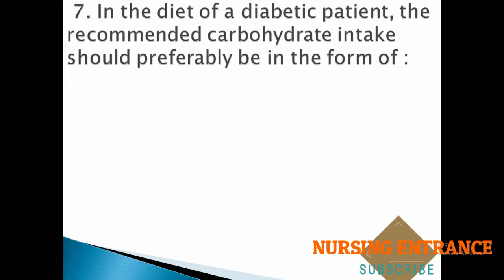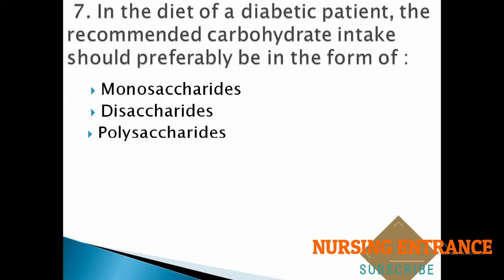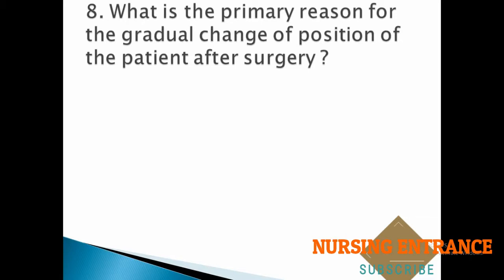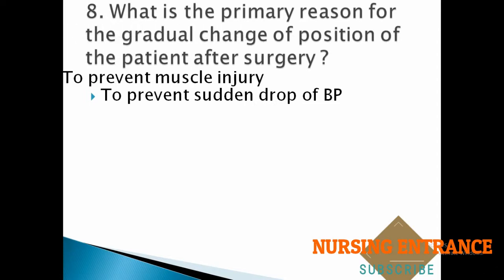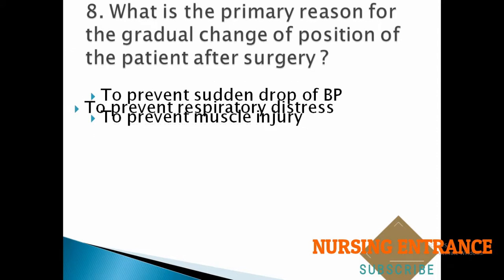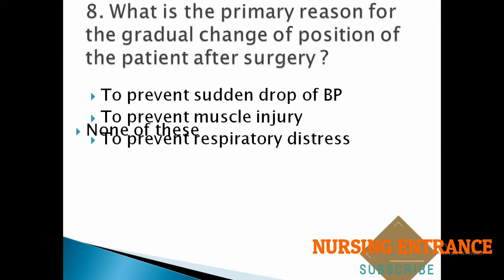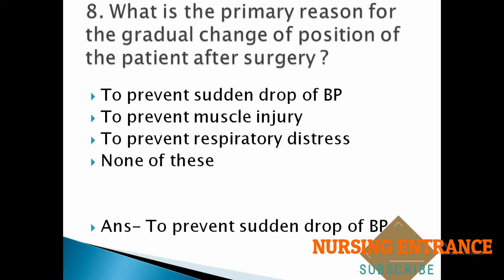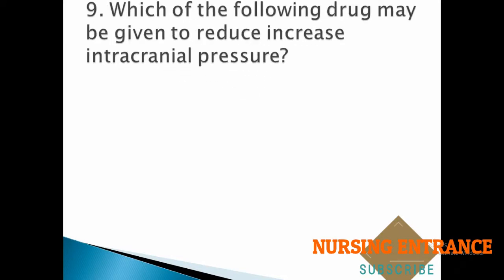Question number seven: in the diet of a diabetic patient, the recommended carbohydrate intake should preferably be in the form of: monosaccharides, disaccharides, polysaccharides, or all of these. The correct answer is polysaccharides. Question number eight: what is the primary reason for the gradual change of position of the patient after surgery? A. to prevent sudden drop of BP, B. to prevent muscle injury, C. to prevent respiratory distress, D. none of these. The correct answer is A, to prevent sudden drop of BP.